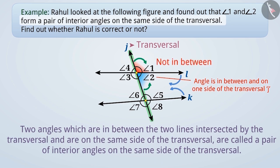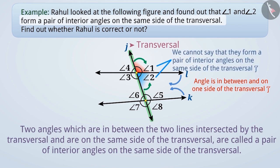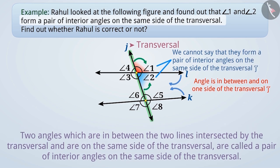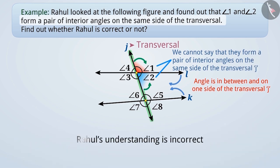Angle 1 is not in between the lines L and K. Therefore, we cannot say that these two angles form a pair of interior angles on the same side of the transversal. That's why Rahul's understanding is incorrect.